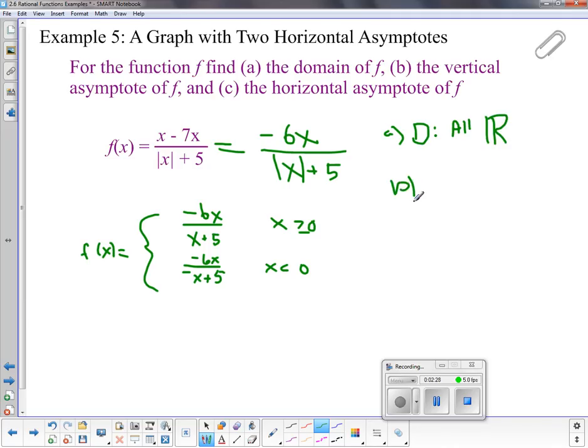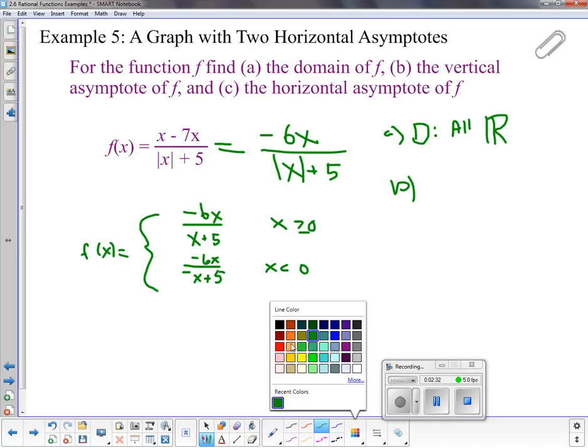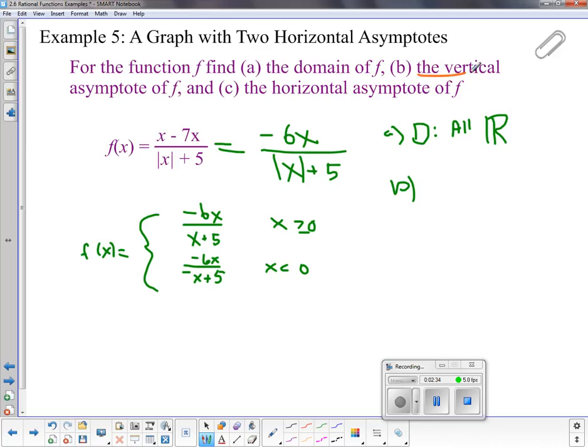Part B, let's take a look at the vertical asymptotes. The vertical asymptotes. That's where the denominator is 0. Well, we just discussed the denominator will never be 0, so we have no vertical asymptotes.